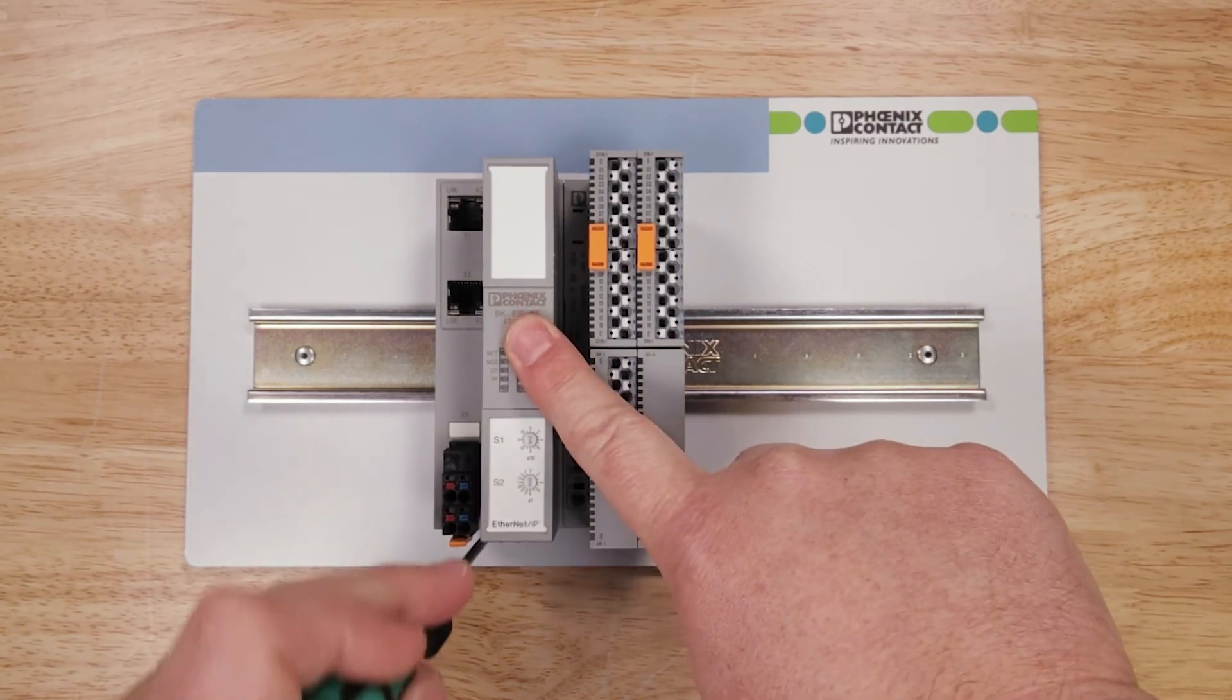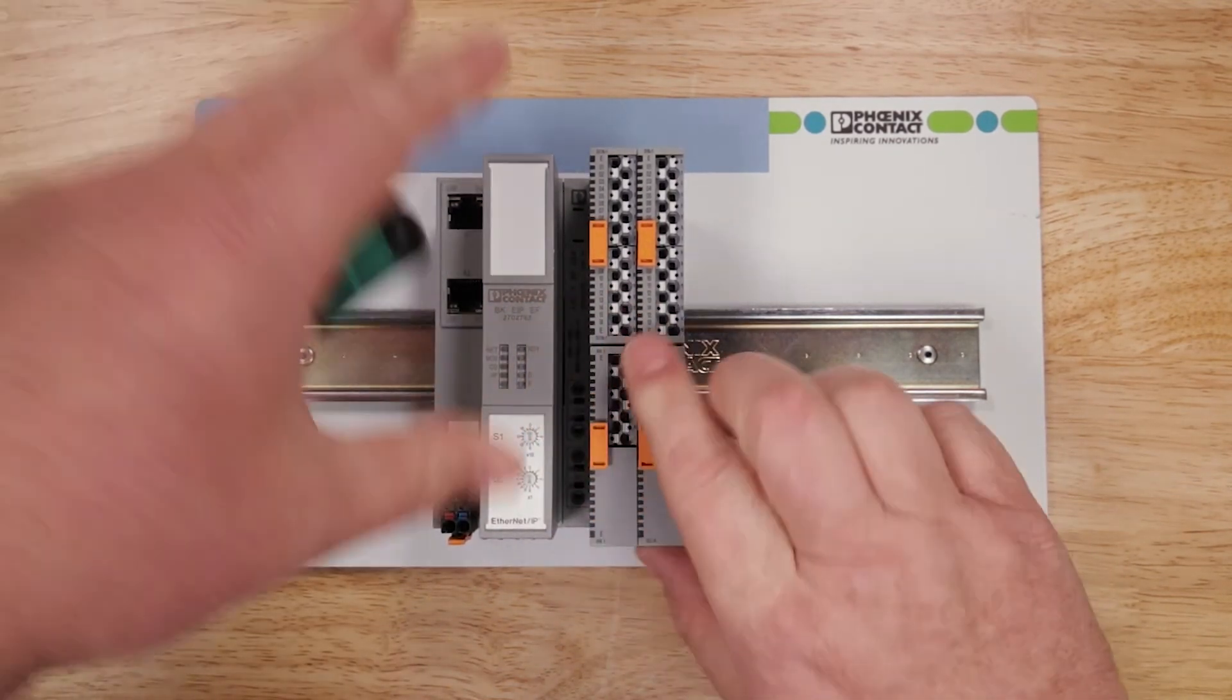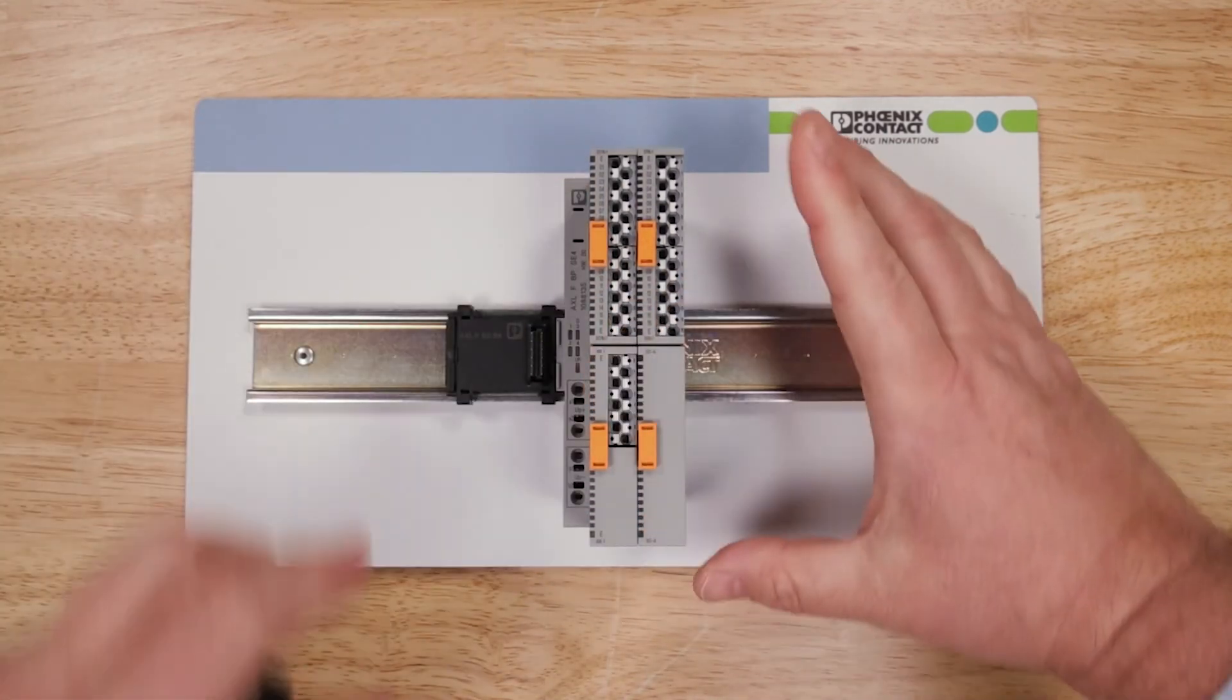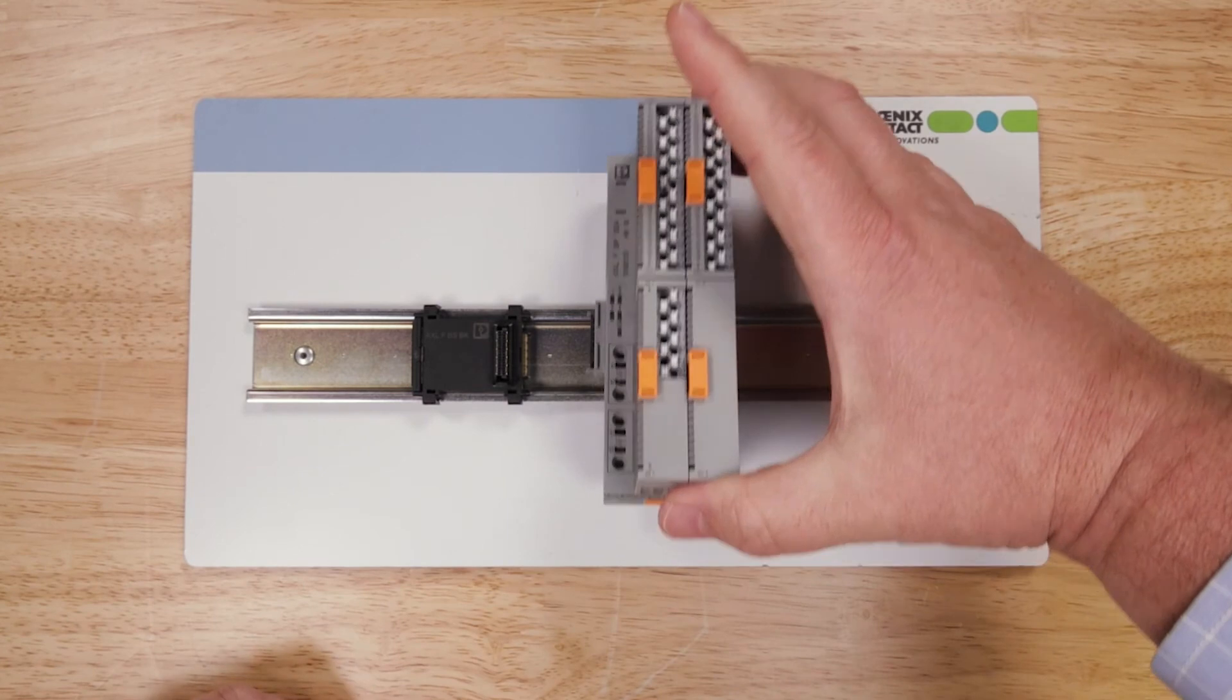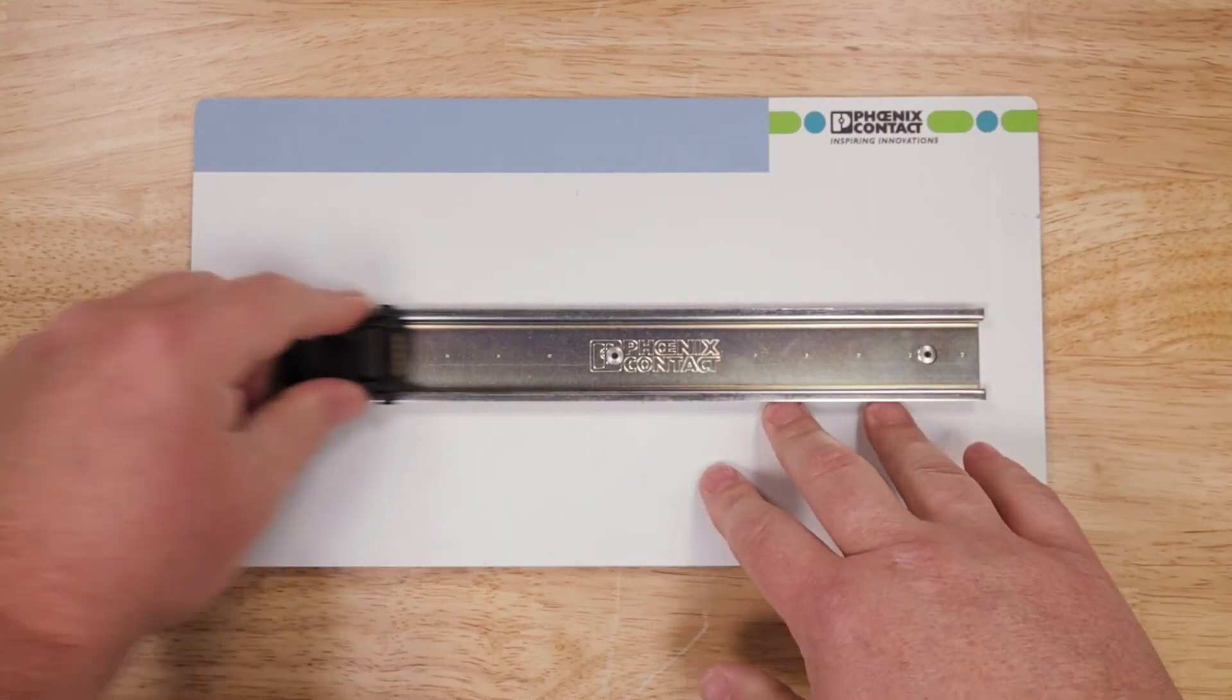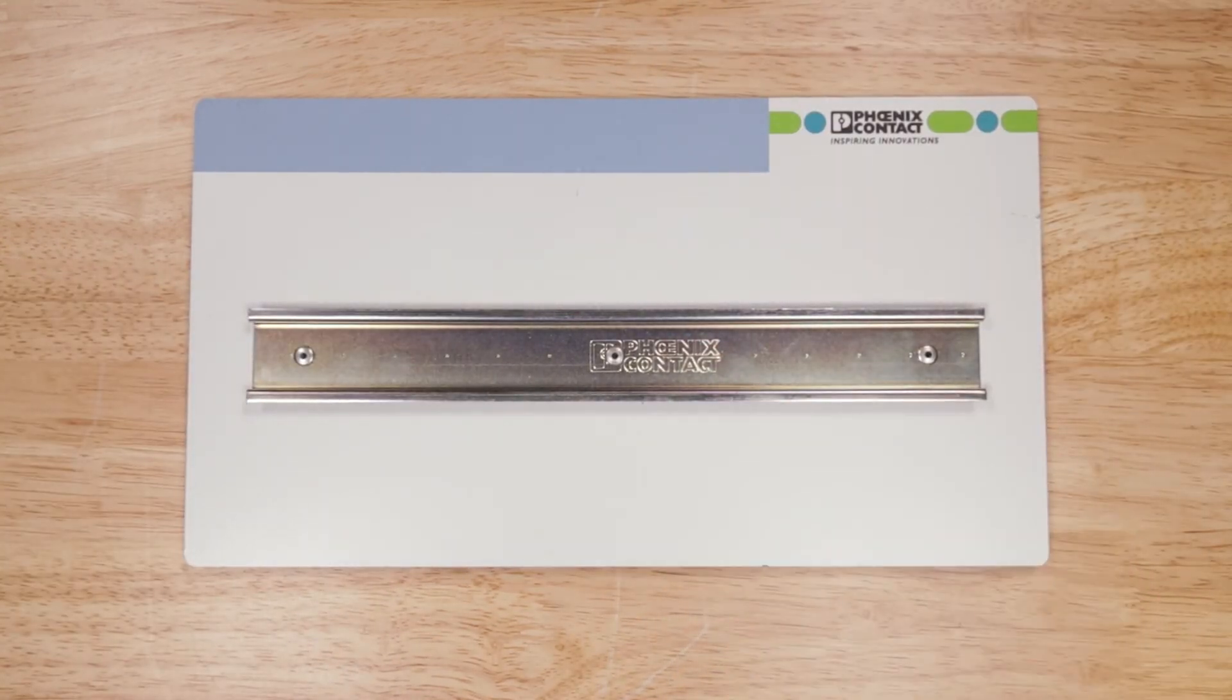Now if I want to remove the Smart Elements base, I'll have to remove the bus coupler first, because the bus coupler overlaps the backplane connection. Remove the bus coupler, slide the base or the backlink piece off, and then simply remove the Smart Element base and the backlink base.